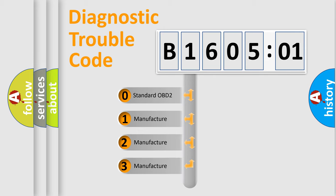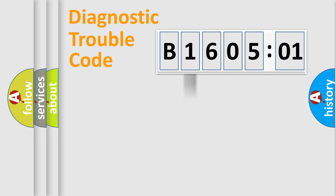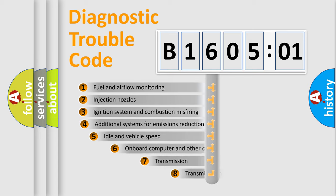If the second character is expressed as zero, it is a standardized error. In the case of numbers 1, 2, 3, it is a manufacturer-specific expression of the car-specific error.